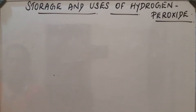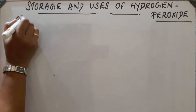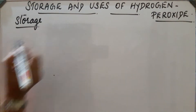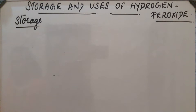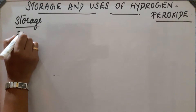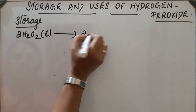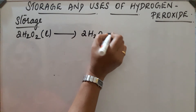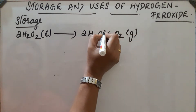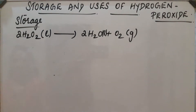Storage and uses of hydrogen peroxide. First, storage. Hydrogen peroxide decomposes slowly on exposure to sunlight: 2H₂O₂ gives 2H₂O plus O₂. This decomposition reaction takes place in H₂O₂, decomposing it to H₂O and O₂ gas.